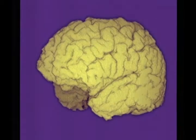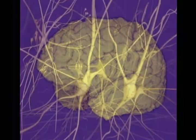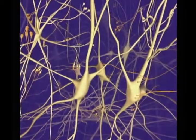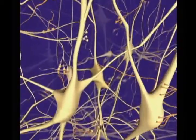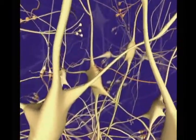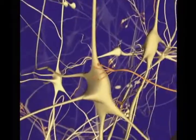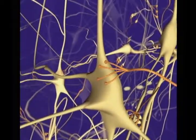The human brain is an amazing structure which oversees functions of the human body. Inside the brain are dense networks of millions of neurons which exchange billions of messages.